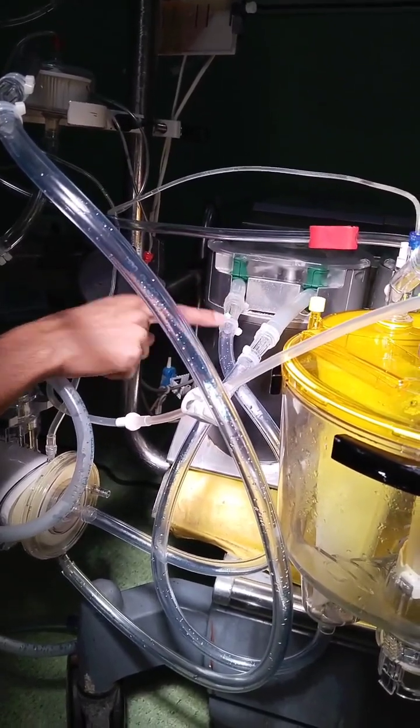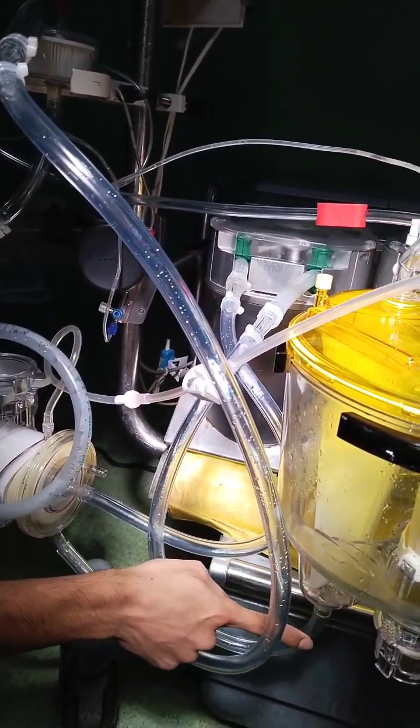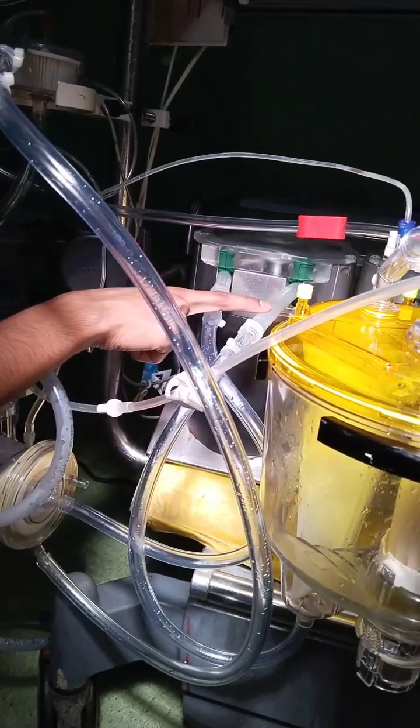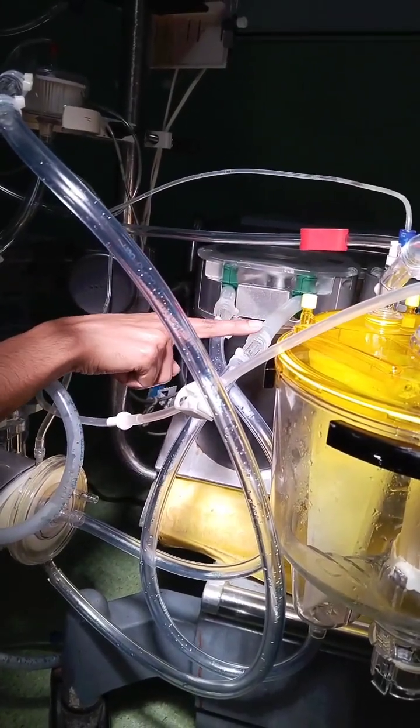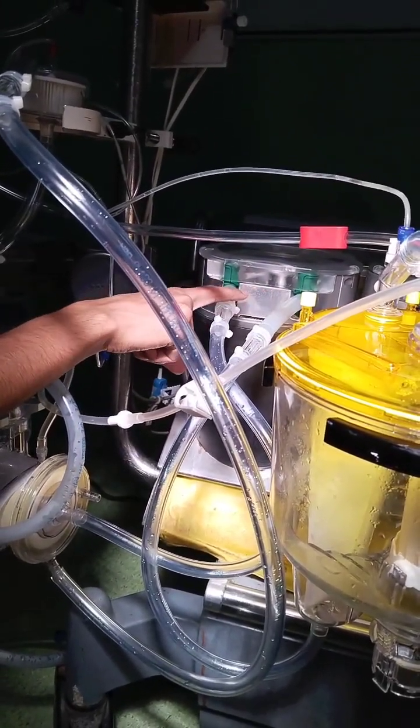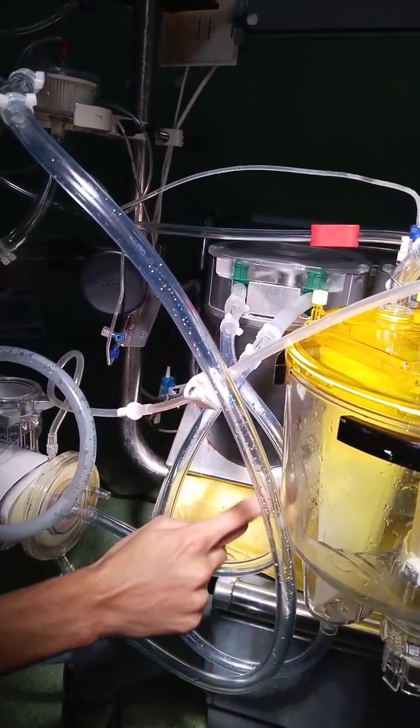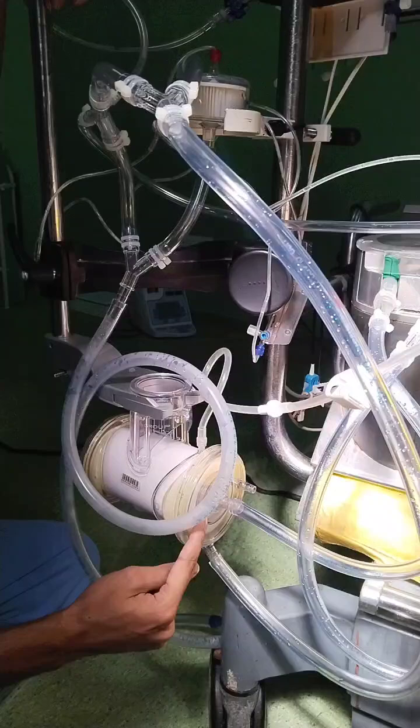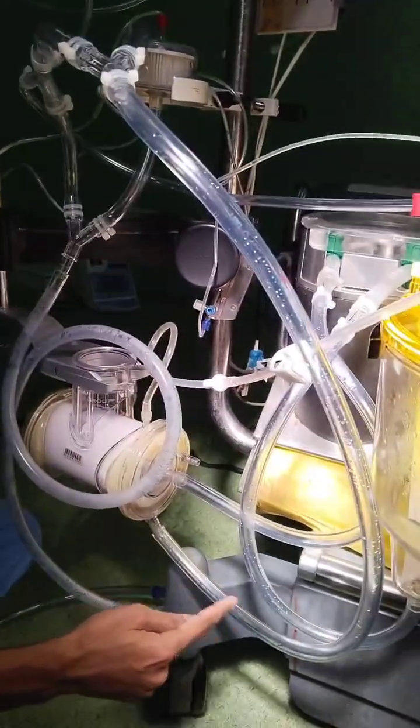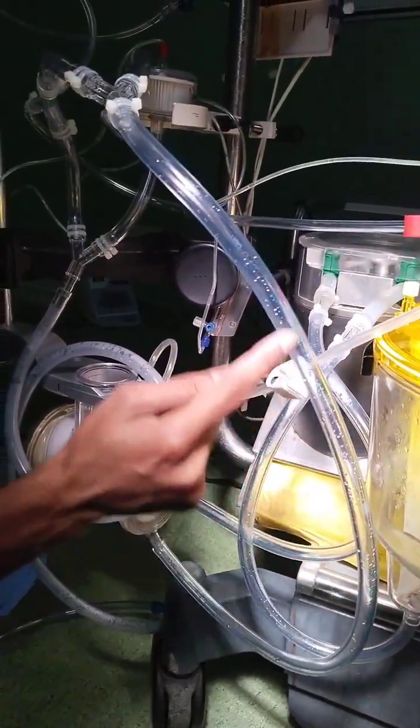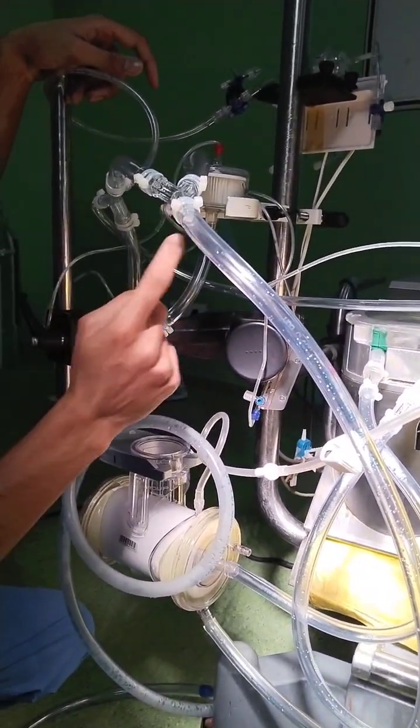Here you will see there is a half three-eight connector. The outlet of the reservoir is 3 by 8, it gets converted into half by half three-eight connector. The pump boot is of half size. Then it will come down to the oxygenator inlet. Here it will get oxygenated and then from the oxygenator outlet it will travel further and go into the arterial filter inlet.